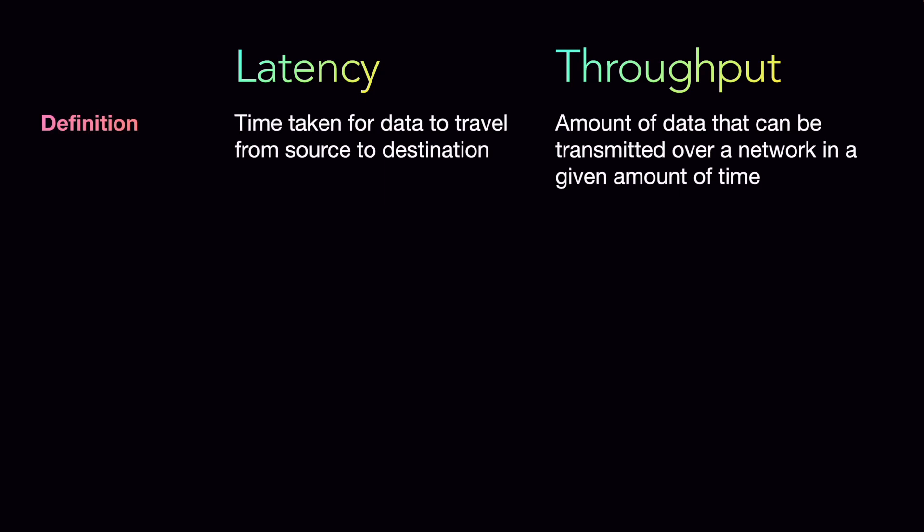Definition: latency is basically the time taken for the data to travel from source to destination. Throughput is amount of data that can be transmitted over a network in a given amount of time. Latency is time taken, throughput is amount of data.